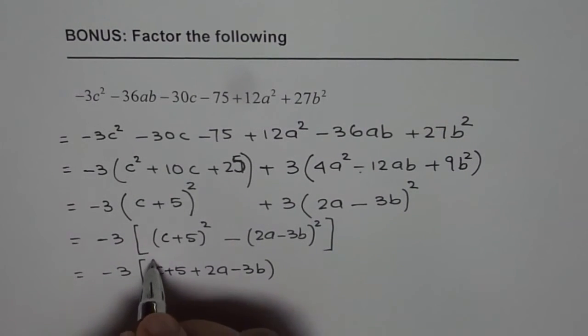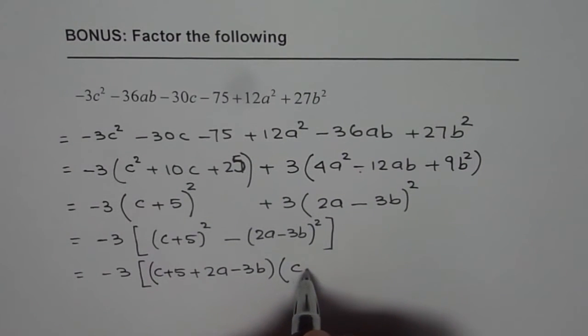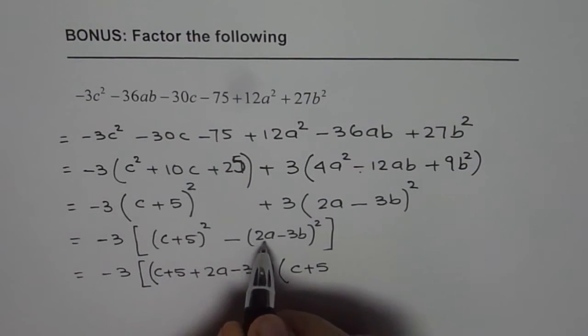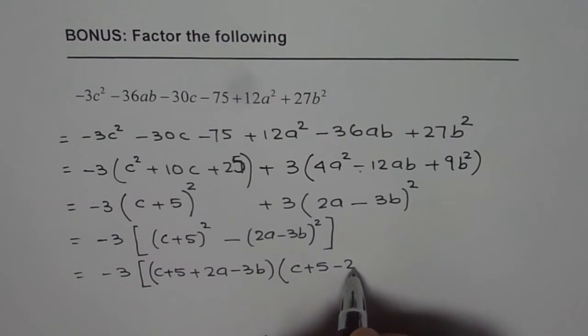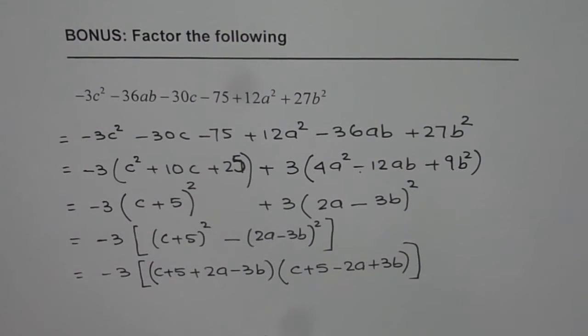So that is to say we get c plus 5 plus these terms plus 2a and that is minus 3b times a minus b which is c plus 5 negative of these negative 2a or plus 3b. So that is what we get.